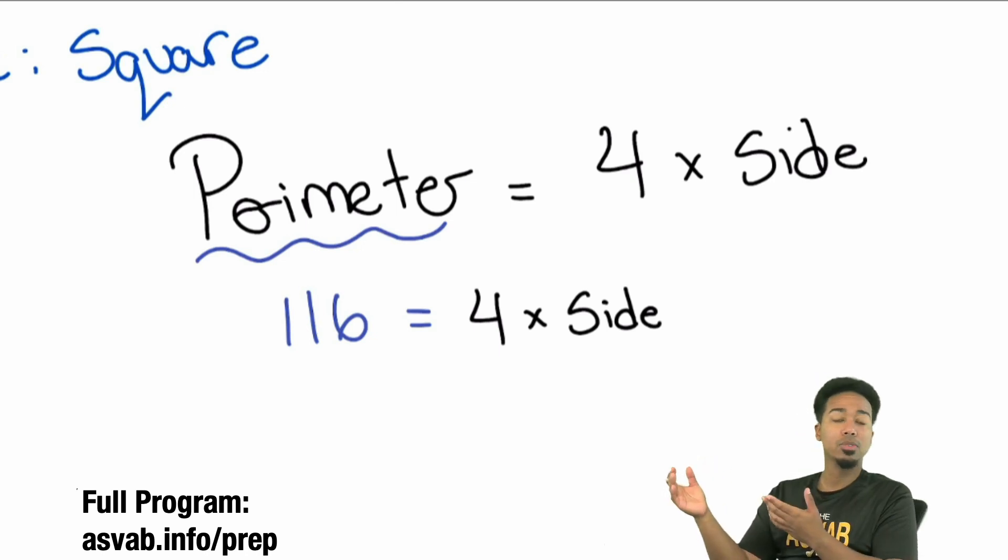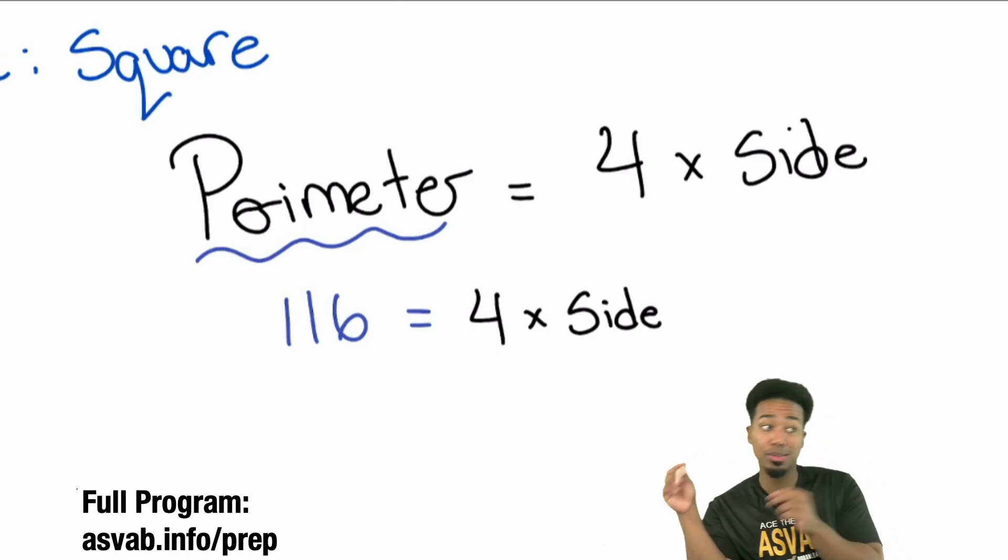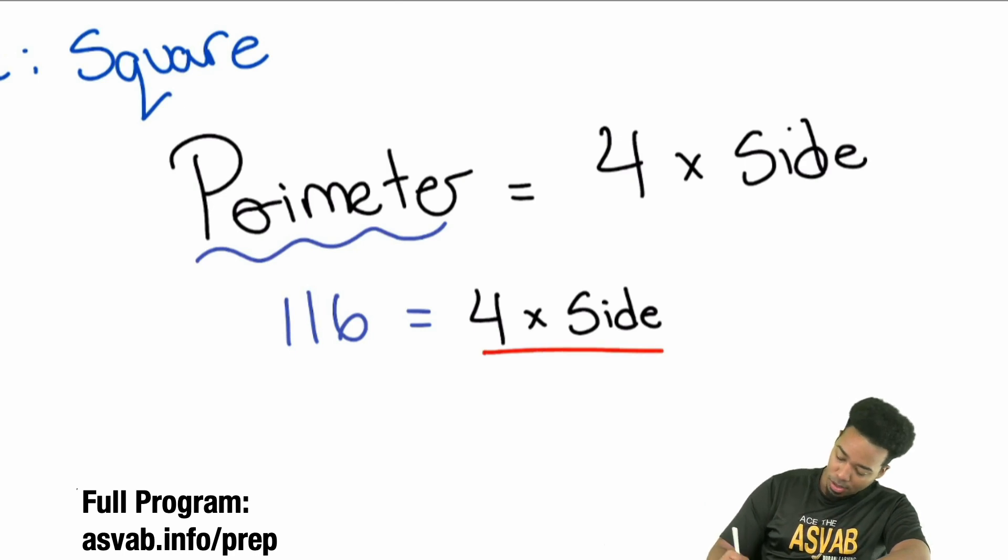And this is where we have to learn how to work backwards. This is where if we know how to work backwards, we're going to give ourselves a much easier time. So everybody, if I wanted to work backwards here, how would I find what the side is? Because to work forward, I would do four times the side, but I'm trying to work backwards. So I would do what to both sides. Correct. I would divide both sides by four. So with that said, booyah, we're good. Divide by four, divide by four.